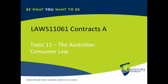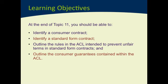During today's lecture we're not going to go into massive amounts of detail about all aspects of the ACL—some of that you'll do in property law, some in corporations law. What we're really only going to look at is those parts of the ACL which specifically affect contracts, and primarily the pieces which specifically affect consumer contracts. We'll look at how to identify a consumer contract, what a standard form contract is, the rules preventing unfair terms in those contracts, and finally consumer guarantees.